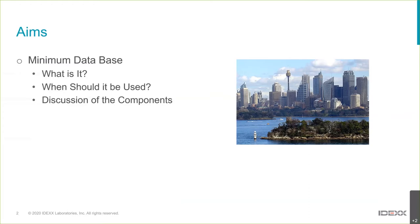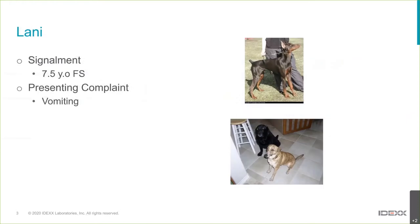I always like to put a case in to bring things to life. This is Lani, a seven-and-a-half-year-old female spayed Doberman — well, the registration form said Doberman, though I'm not sure her parents even knew a Doberman. She was a nice dog and she was presented with a history of vomiting.